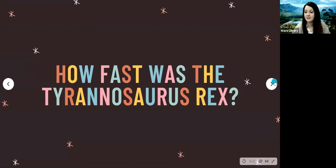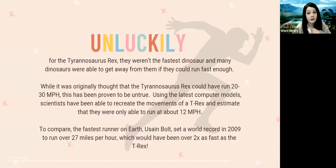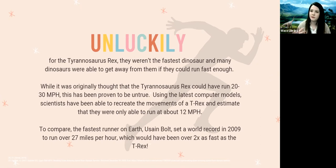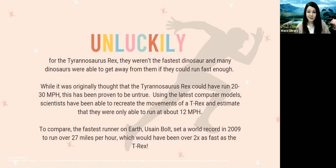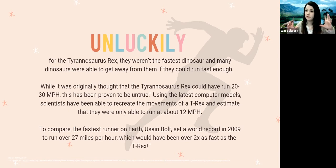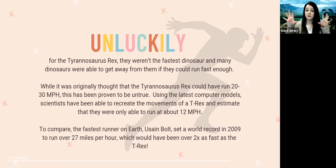How fast was the Tyrannosaurus rex? Unluckily for the T-Rex, they were not very fast — fast enough dinosaurs could definitely run away from them. Originally it was thought they could run 20 to 30 miles an hour, but using computer models, scientists have been able to recreate T-Rex movements and estimate they could only move about 12 miles an hour. By comparison, Usain Bolt set a record in 2009 running over 27 miles an hour — more than twice as fast as a T-Rex. In a race, Usain Bolt would have won by a lot.